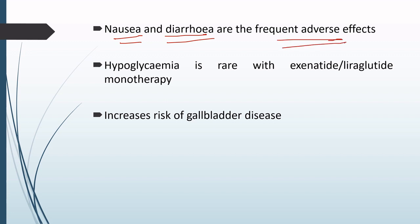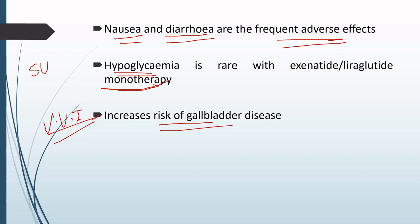For both Exenatide and Liraglutide — and indeed for most GLP-1 receptor agonists — hypoglycemia with monotherapy is very rare. Hypoglycemia does occur especially when the patient is also given sulfonylureas, in which case the chances of hypoglycemia increase. Another very important point about Liraglutide is that it increases the risk of gallbladder disease.